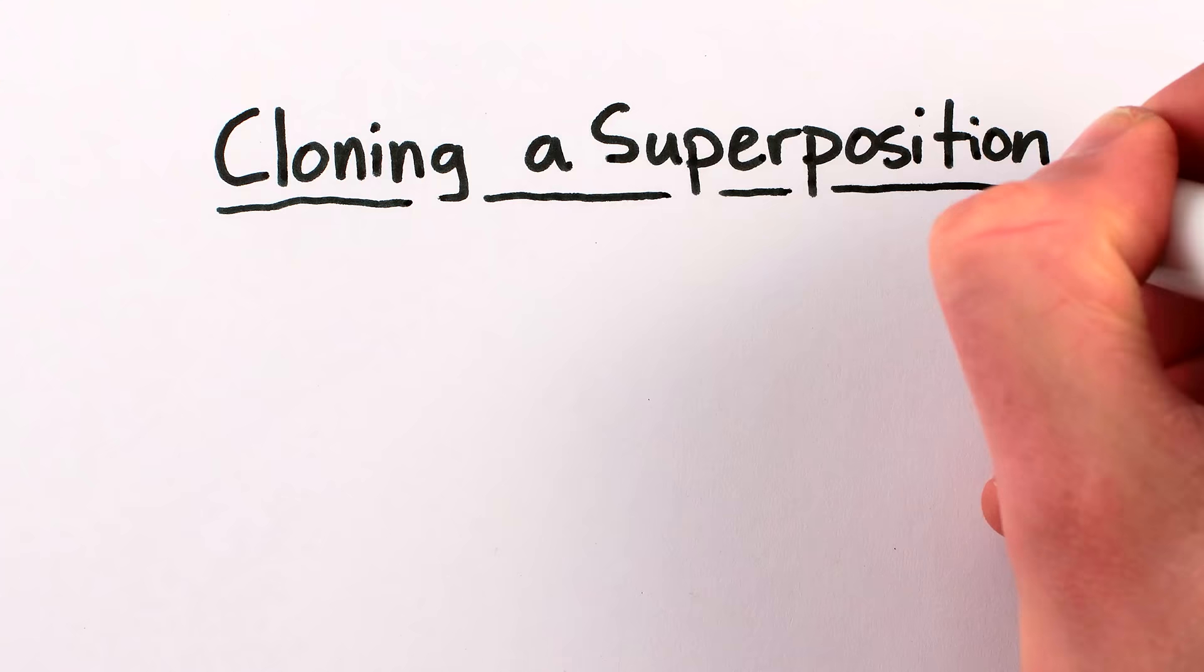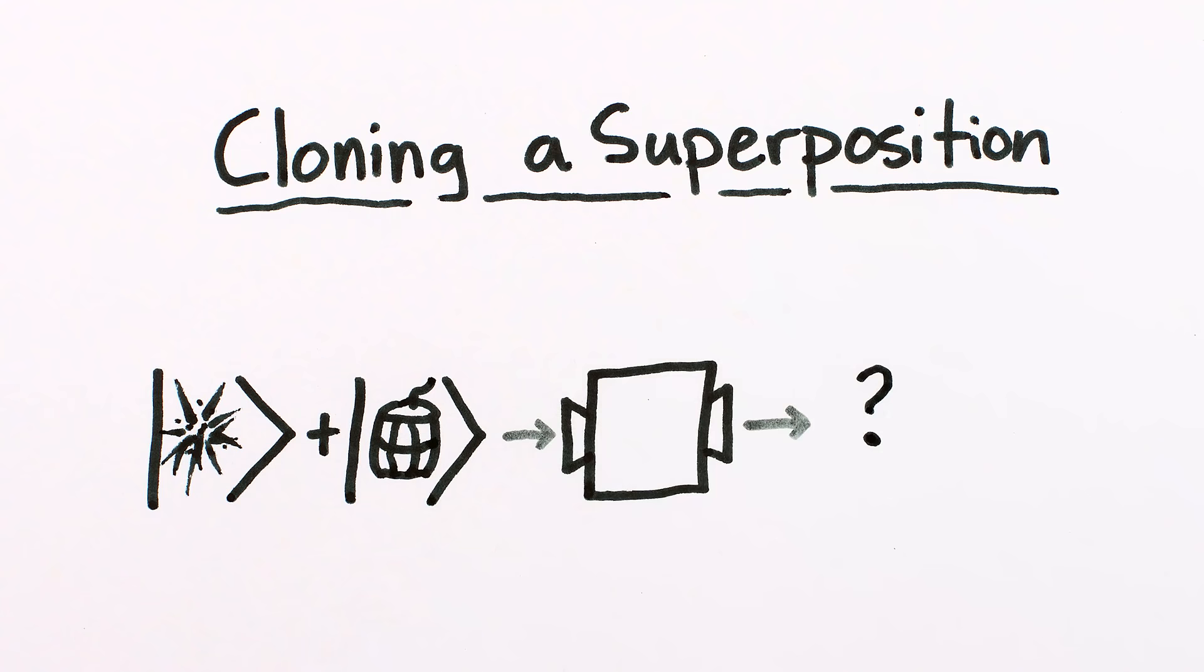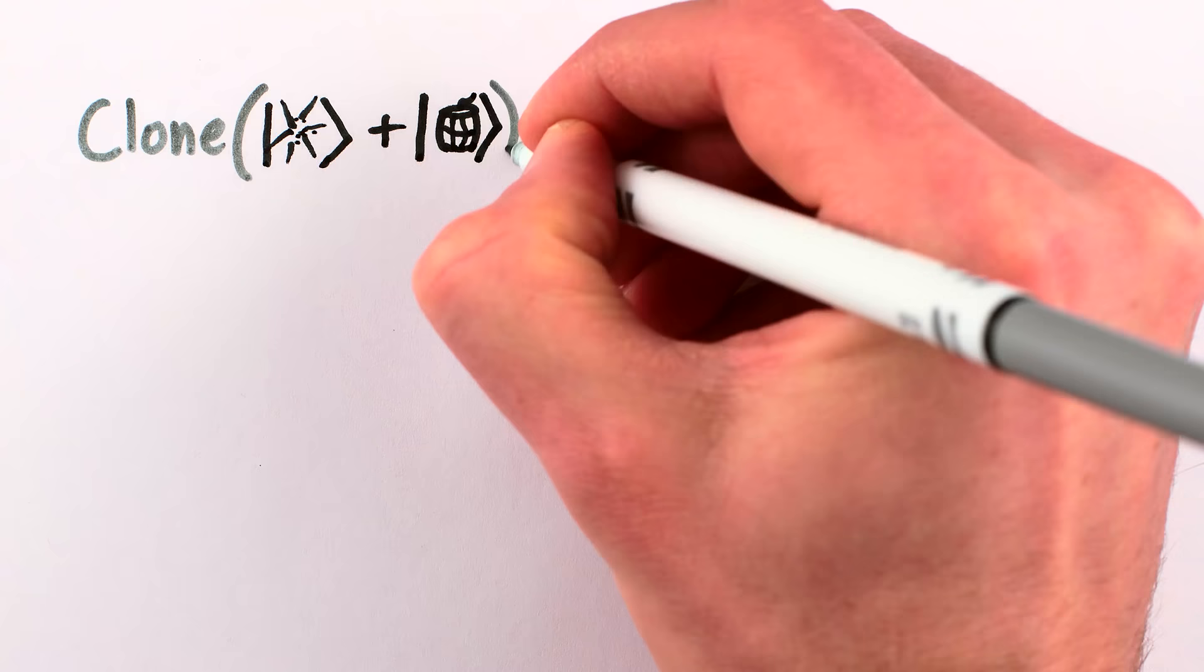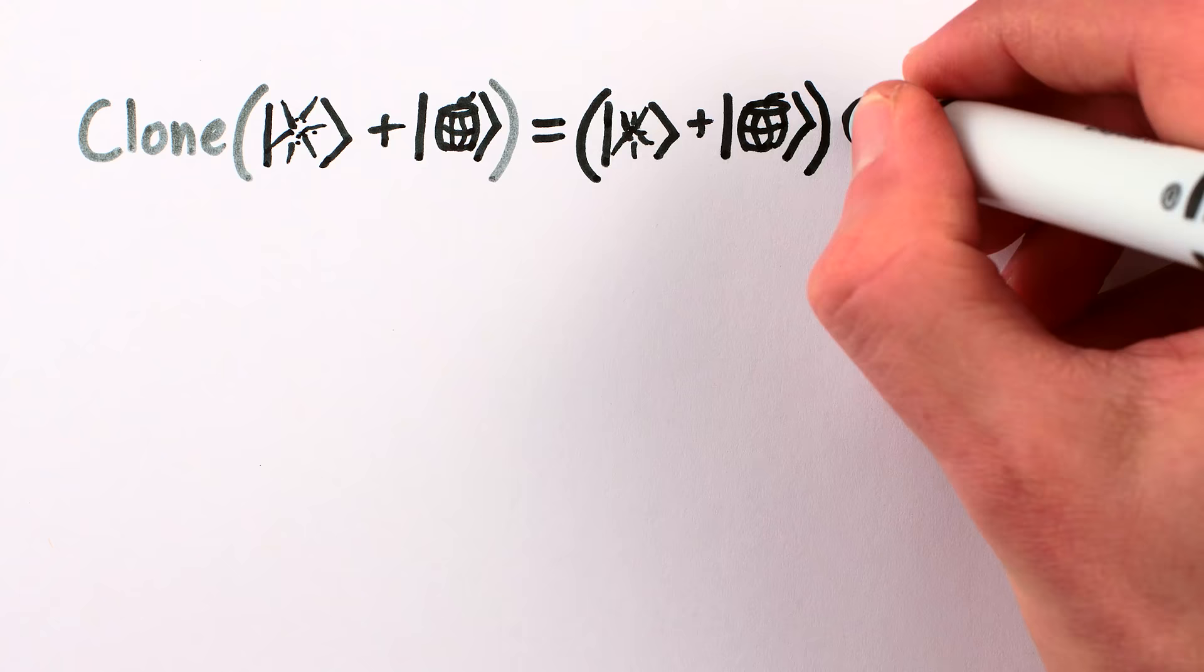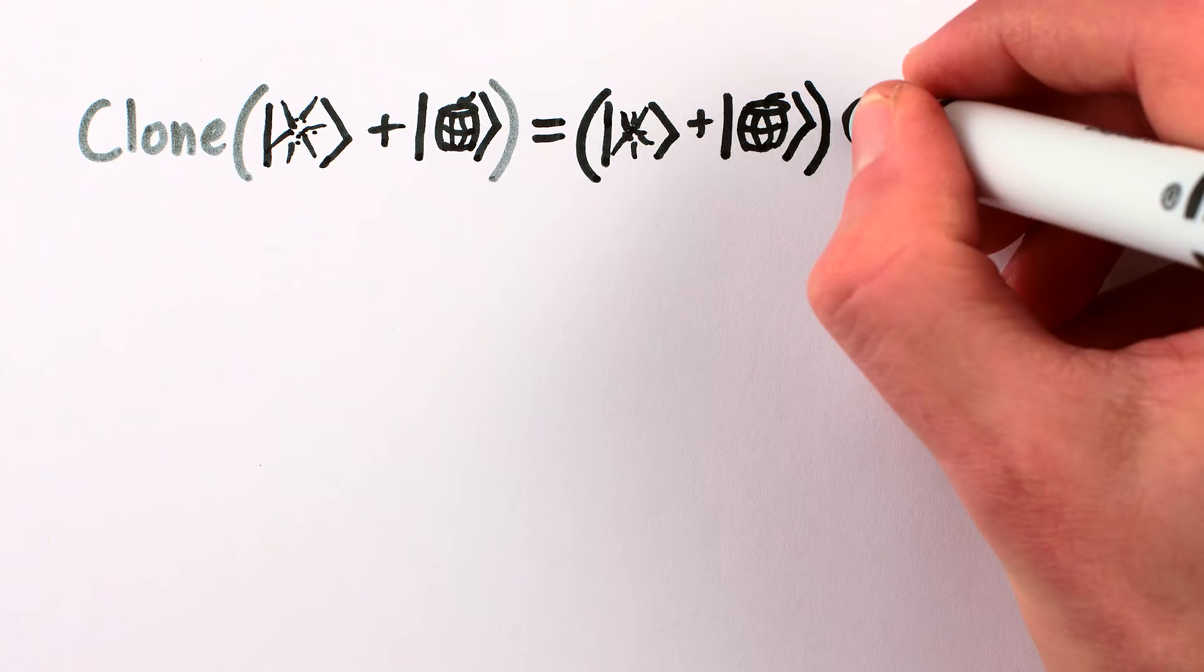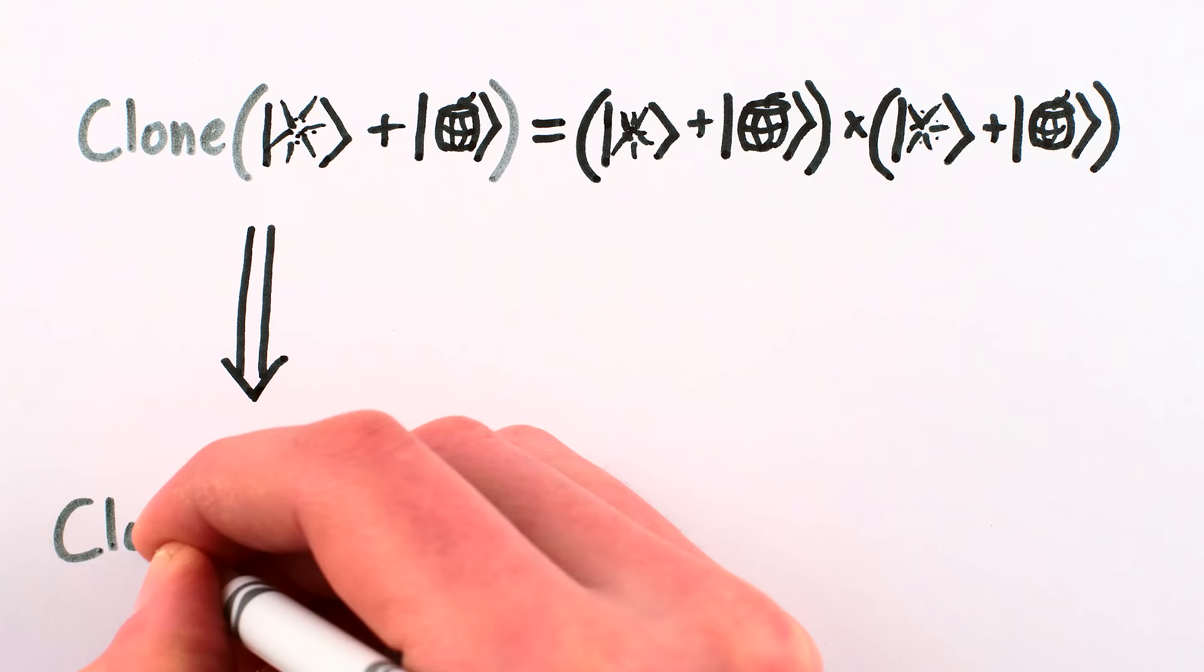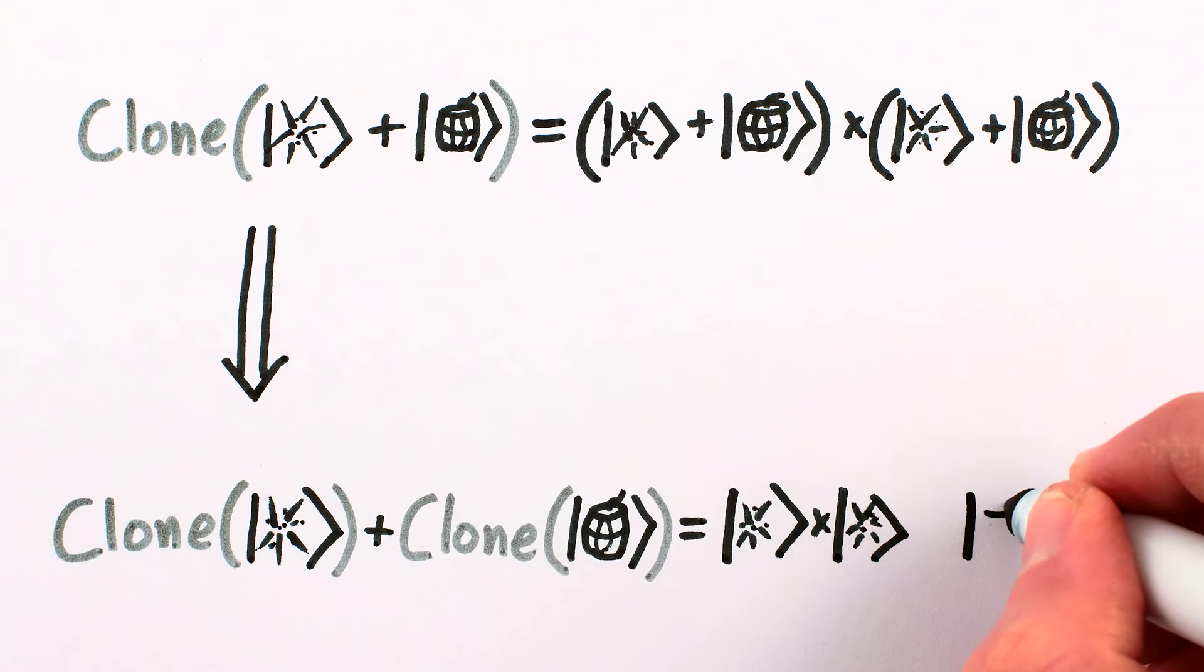The problem occurs, however, if the specimen we're cloning is a superposition, like if it's the gunpowder from inside Schrodinger's cat's box, in a superposition of exploded and not exploded. If we apply our hypothetical cloning to the whole gunpowder-inside-the-box superposition, we get exploded plus not exploded times exploded plus not exploded. But since in quantum mechanics a procedure applied to the whole gets distributed through as the sum of the procedure applied to the parts, that means that we should get the same result by applying cloning to each part of the superposition, separately cloning exploded and not exploded, and then adding them together.